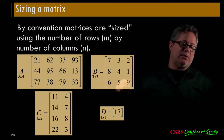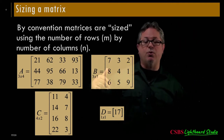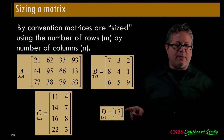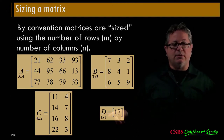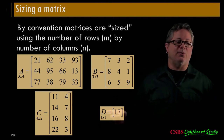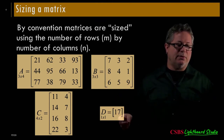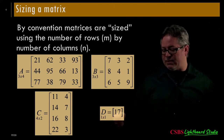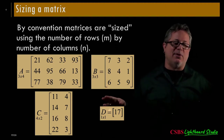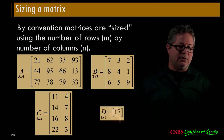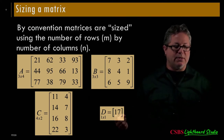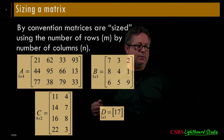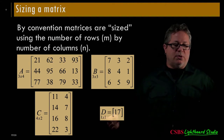A square matrix has the same dimensions — the same number of rows as it does columns. Here is a 4 by 2: 4 rows, 2 columns. And then you get the special case of a 1 by 1 — that's just a scalar, just an individual number. A scalar is a special case of a matrix where both rows and columns are 1.